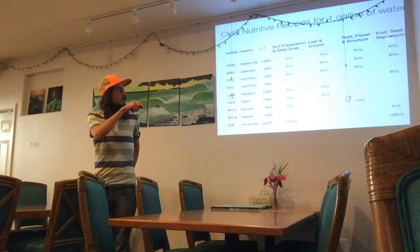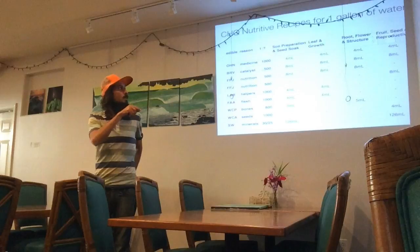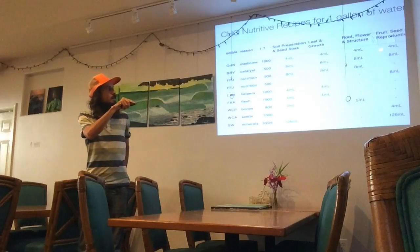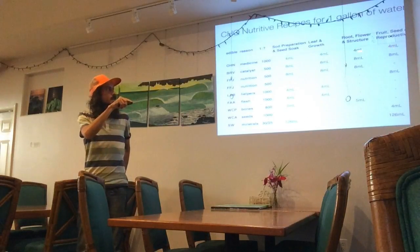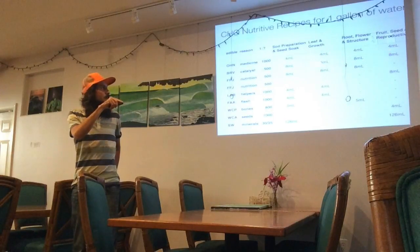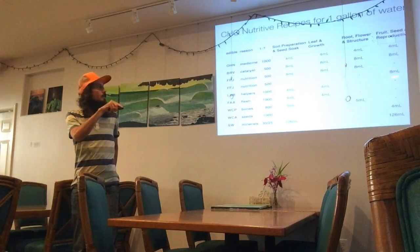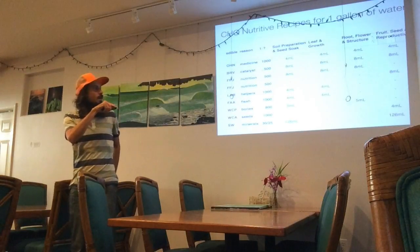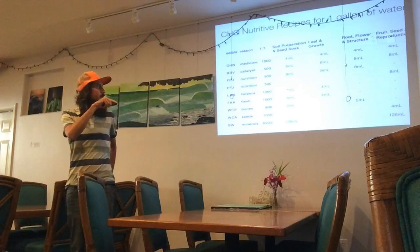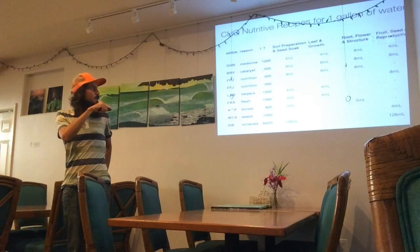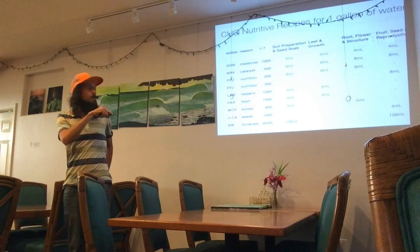Essentially what you'll see across the chart is that each stage includes OHN and VRB, and the majority also include FPJ or a fruit juice. As you go down into the lower stages it differentiates based on whether it includes fish amino acid, water-soluble calcium phosphate, or water-soluble calcium.